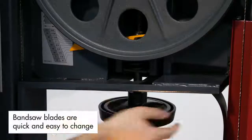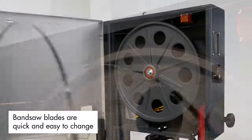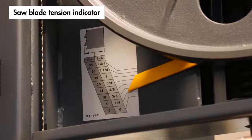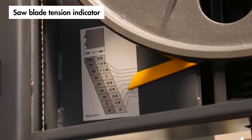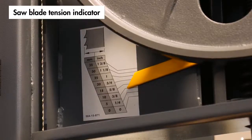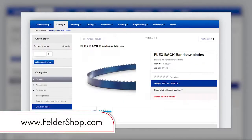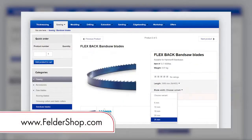Similarly, the bandsaw blade is also easily changed in just a few steps, and the blade tension indicator eliminates the need for guesswork by displaying the correct tensions for a range of different blade sizes. Sizes from 6 to 25mm are available to order from our online shop.